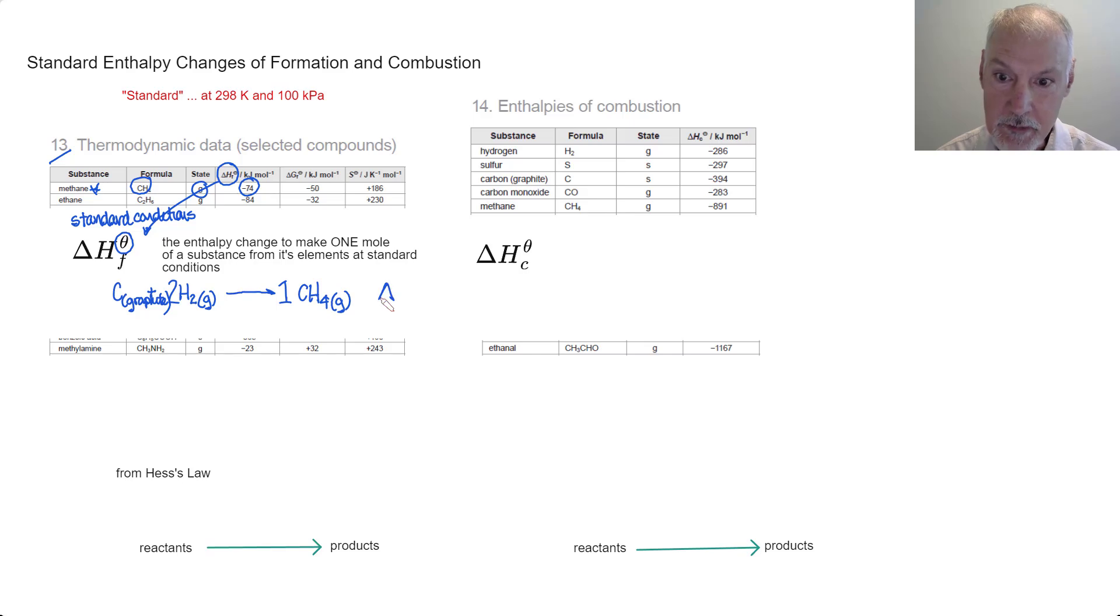When we see the enthalpy change for that reaction, that's for this particular equation. The delta H formation of this particular reaction is an exothermic reaction, negative 74 kilojoules per mole.